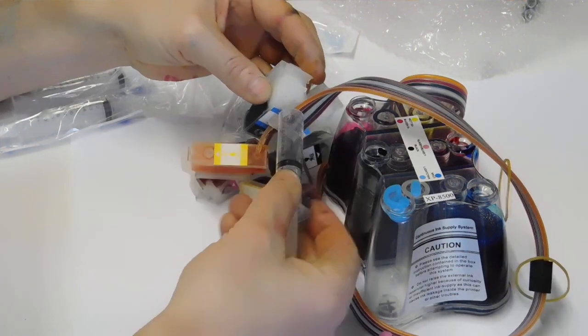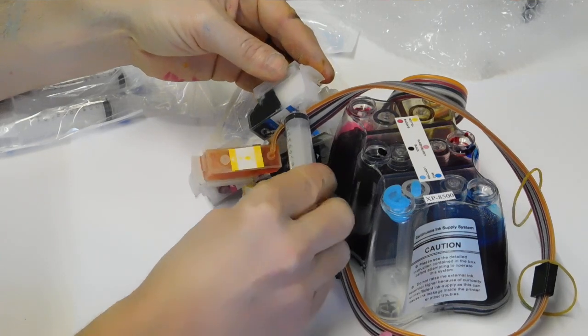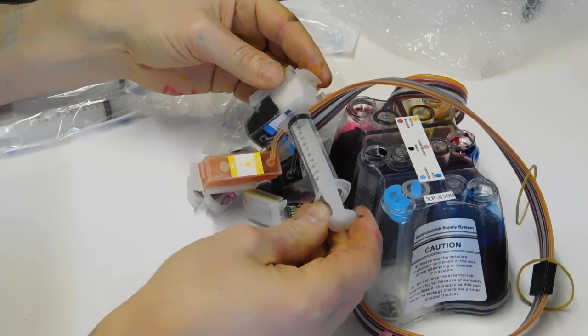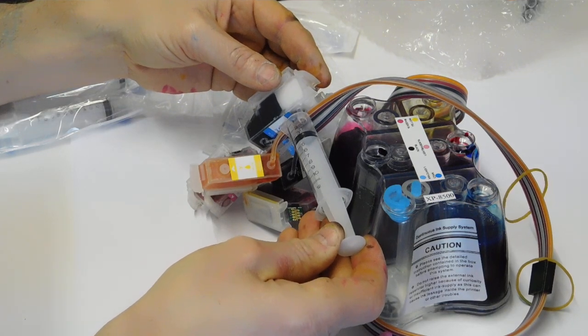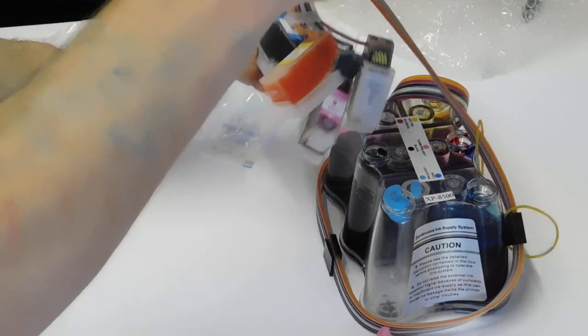Syringe in. Stop, halfway, expel the air, back in. When it gets near the outlet, flip it over.